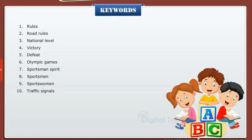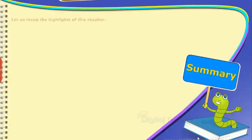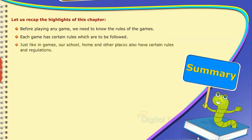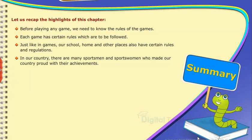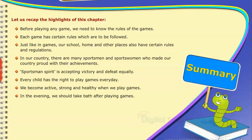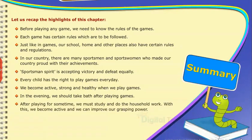A list of keywords for this chapter is shown on the screen. Let us now recap the highlights of this chapter. Before playing any game, we need to know the rules of the games — each game has certain rules which ought to be followed. Just like in games, our school, home, and other places also have certain rules and regulations. In our country, there are many sportsmen and sportswomen who made our country proud with their achievements. Sportsman's spirit is accepting victory and defeat equally. Every child has the right to play games every day. We become active, strong, and healthy when we play games. In the evening, we should take a bath after playing games. After playing for some time, we must study and do the household work — with this, we become active and can improve our grasping power. By playing games, people develop values like sportsmanship, team spirit, and group work.